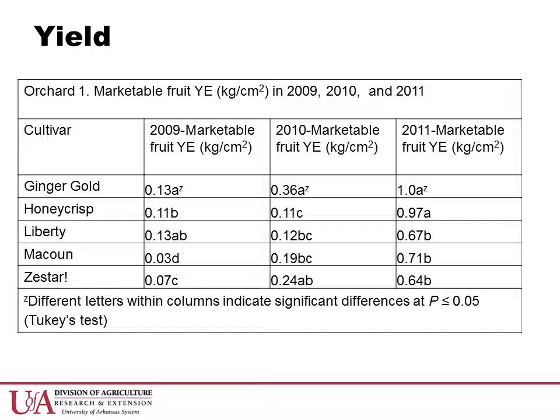When we look at marketable yield efficiency across the three years of the study, Ginger Gold has been consistent as the top performer of all of the cultivars in every year. Yield efficiency for 2010 was likely low due to frost at bloom, but the increase in yield efficiency from 2009 to 2011 for all cultivars is encouraging, because it shows all cultivars are increasing in yield over time, even when accounting for increased tree growth.